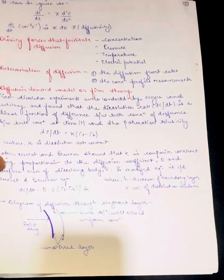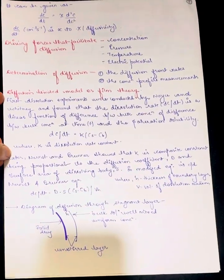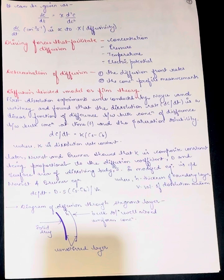It can be given as dC/dt equals D times (d²C/dx²), where dC/dt is represented in centimeter per cube per second and is directly proportional to D, which is diffusivity.